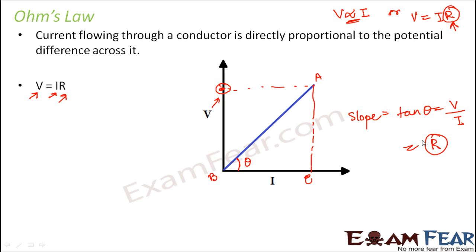It is also important to know that the V-I curves for metals are different at different temperatures. When you vary the temperature, the curve changes, but it always remains a straight line because Ohm's Law still holds true.